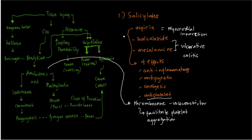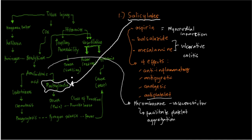Generally, salicylates target prostaglandin — the chemical that causes pain. Salicylates act by inhibiting the synthesis of prostaglandin, so if there is no prostaglandin, there will be no pain. That is why aspirin, as a salicylate, has an analgesic effect — meaning it has a pain-blocking property.